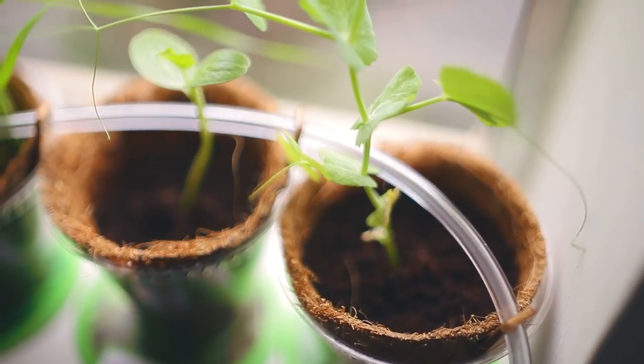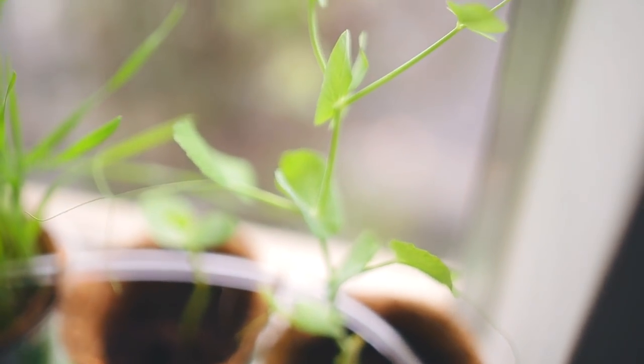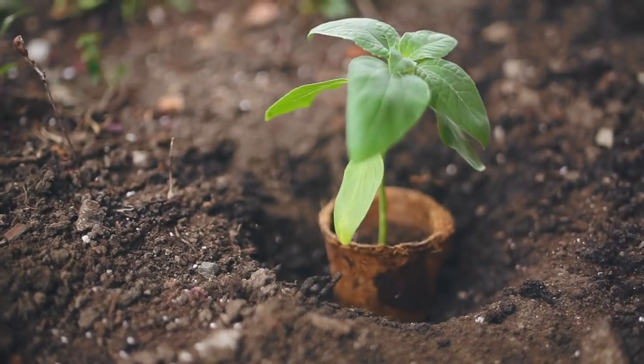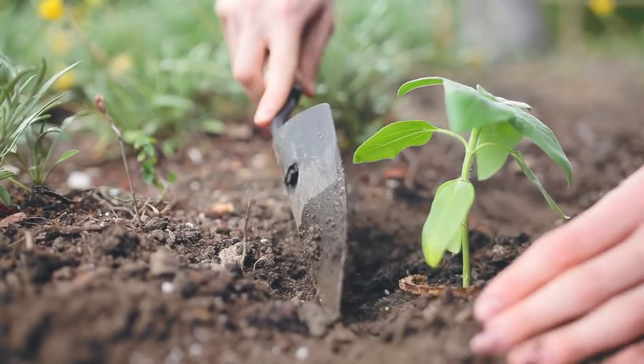Once your plants have grown five or more leaves, you can start thinking about transplanting them. To do this, just take your plantable pot, stick it in the ground, and cover with a little bit of dirt. Then make sure to keep watering.